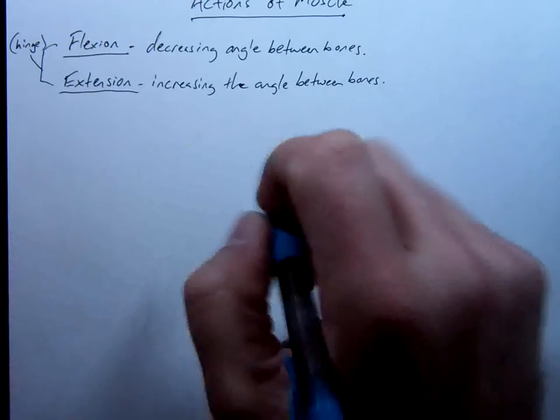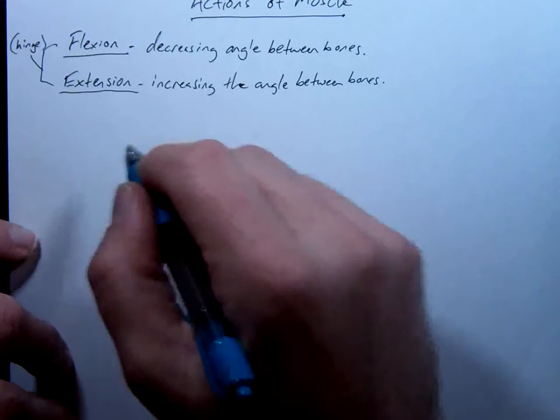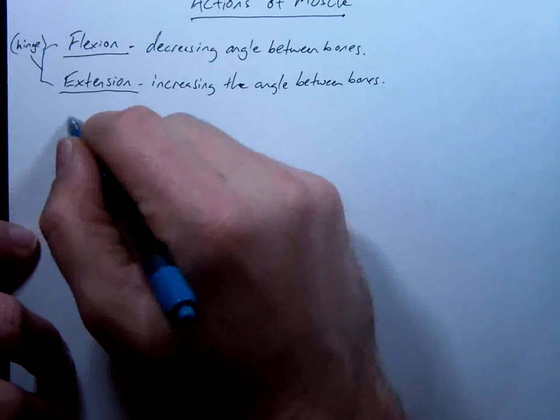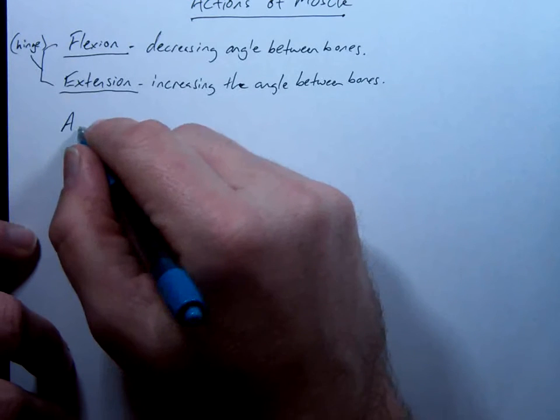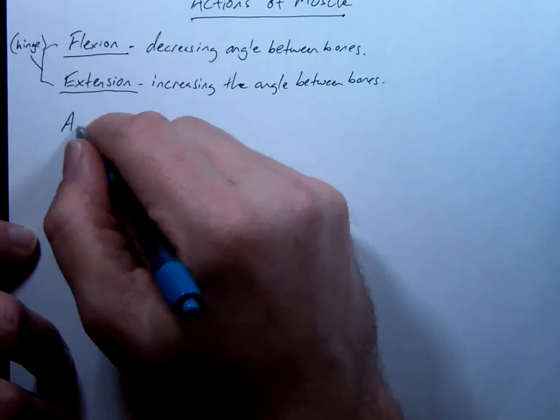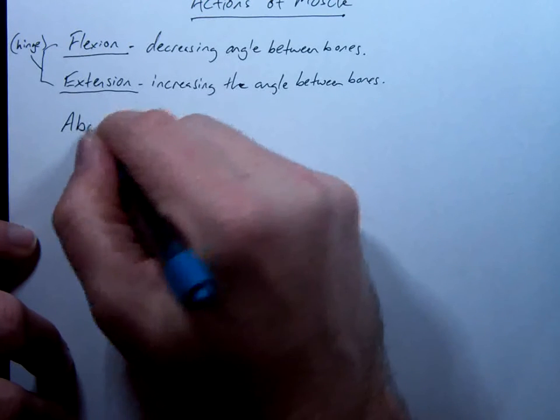The next ones we're looking at here are ones that most often occur at ball and socket joints. These two are very often confused because they're almost the same spelling. In fact, just flip one letter. To move away from the midline is something called abduction.